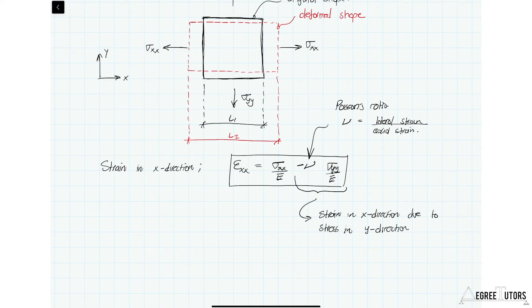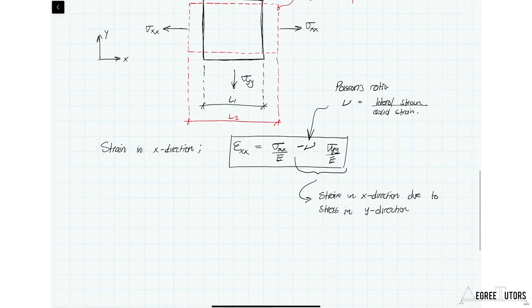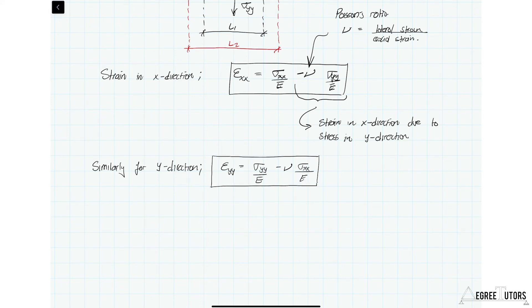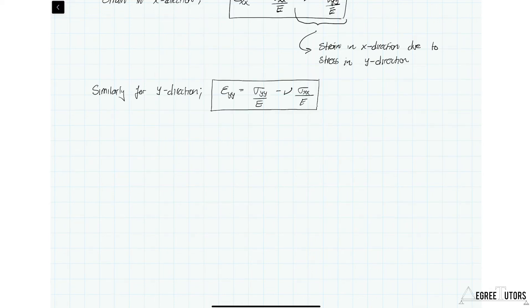The corresponding relationship for strain in the y direction follows the same form. These two equations together tie stress and strain for a 2D element experiencing biaxial stress. The last set of relationships we want to state are those between shear stress and shear strain.